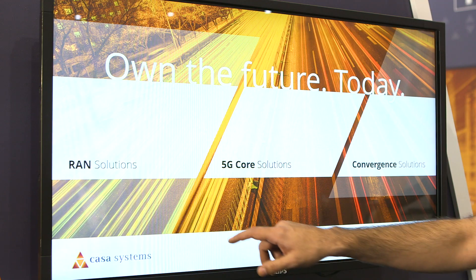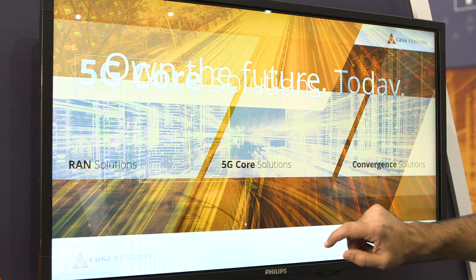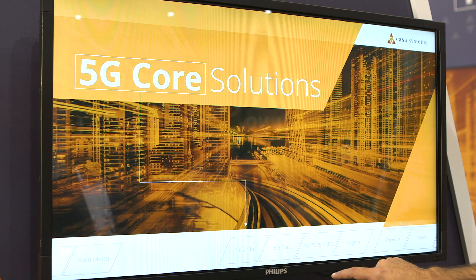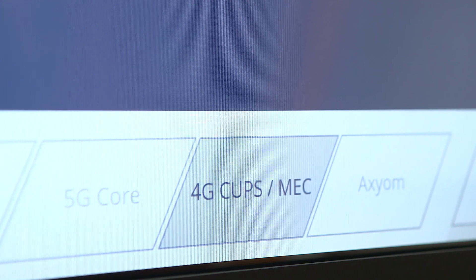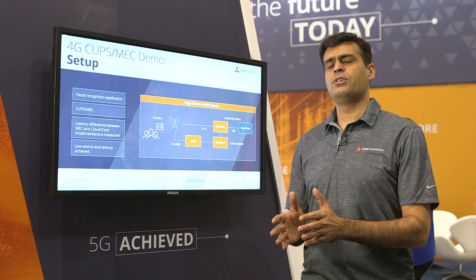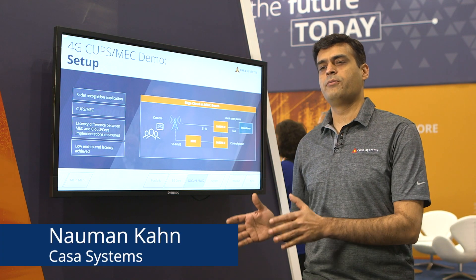Before 5G, you have to go for an enhancement of your 4G architecture, which means you have to separate the control and user plane traffic so that you can make use of mobile edge computing in the most optimum way.